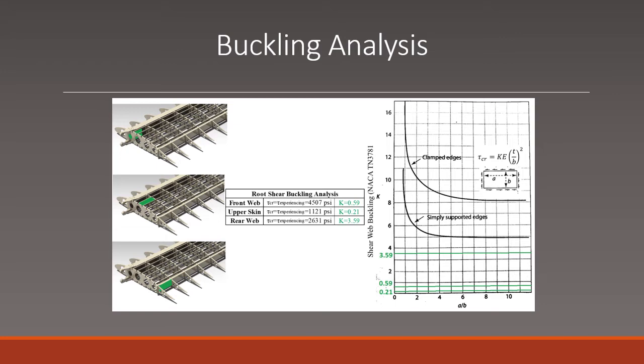In the shear buckling analysis, the team had assumed the critical shear stress for the front and the rear web and the top skin to be equal to the shear stress that each component was experiencing based on the shear box design. The buckling chart shows the shear buckling factor k for front and rear web and the top skin are exceptionally low, which means these components will not be suffered from shear buckling and the structure will be safe.